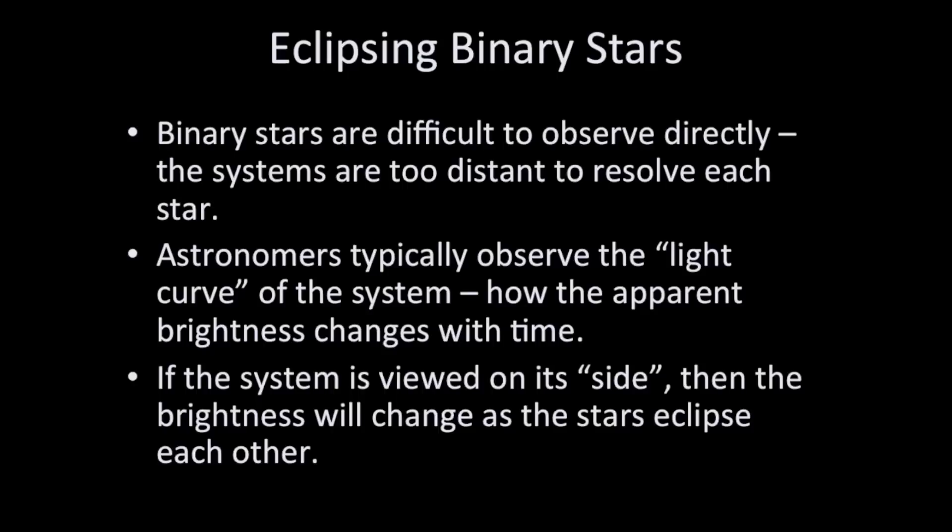Also, many binary star systems are just too difficult to see the individual stars because the stars are so far away and the binary pairs are so close together that even with good telescopes, we can't always resolve both stars.